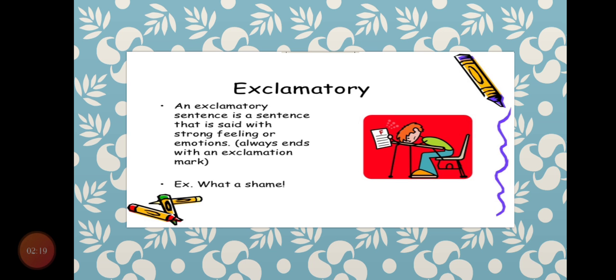Exclamatory: An exclamatory sentence is a sentence served with strong feeling or emotion and always ends with an exclamation mark. You can see the example: 'What a shame!' So after 'shame' there is a mark called the exclamation mark. The exclamatory mark shows that you are saying something with strong feeling. 'What a shame!' 'What a beautiful scene!' It means you are emphasizing something, so that is why you use the structure that is an exclamatory sentence.